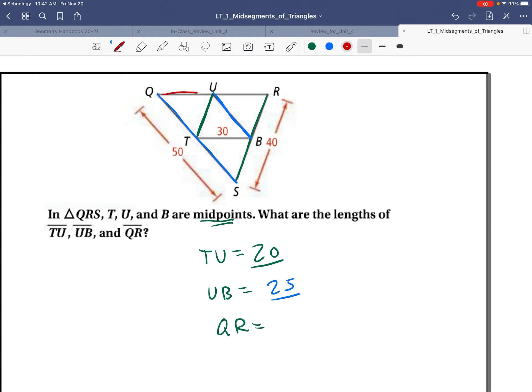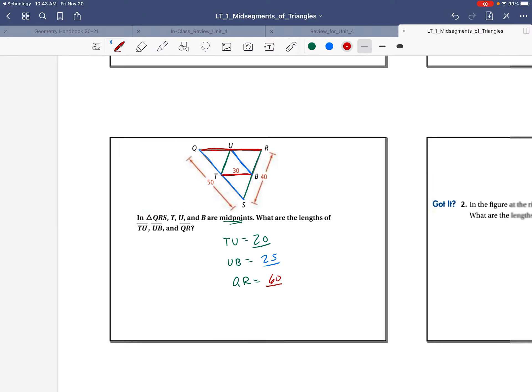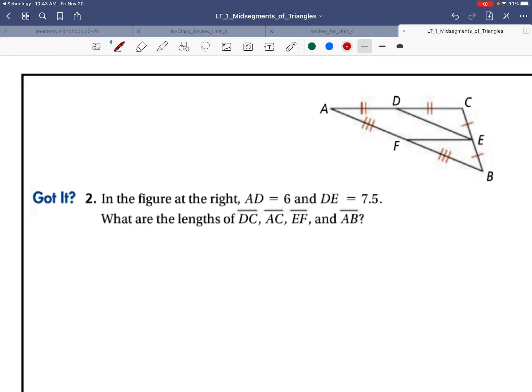QR is this segment. We know its mid-segment is 30, so this is going to be twice that. So that will be 60. Any questions? Check with me if you have any questions on that.